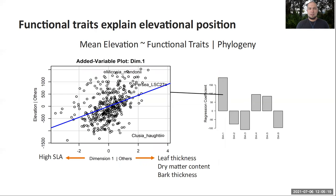For example, we found that species in the lowlands typically have high specific leaf area, while species in the highlands typically have thick leaves with high dry matter content and also thick barks.